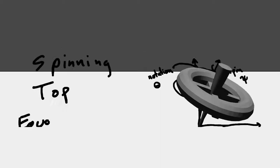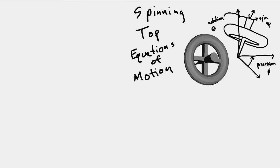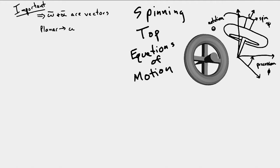Today we're looking at the spinning top equations of motion. An important thing to remember with 3D motion is that omega and alpha are vectors that describe rotation — angular rotation and angular velocity. Whenever we have a planar system, meaning the object is fixed to move in a 2D plane, we only have one vector representing rotation, just whatever that theta-dot is. Alpha, the angular acceleration, would be omega-dot, or theta double-dot in the k-direction, so it's always rotating in or out of the plane.